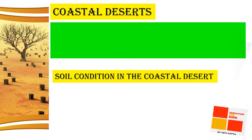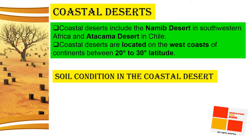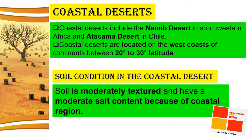Coastal deserts include the Namib Desert in South and West Africa and the Atacama Desert in Chile. Coastal deserts are located on the west coast of continents between 20 to 30 degree latitudes.